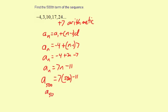So a_500 equals 7 times 500, which is 3,500, minus 11. So a_500 is 3,489. That's the 500th term of the sequence.